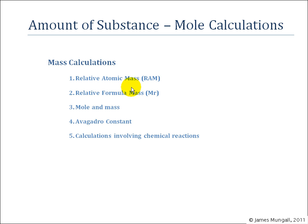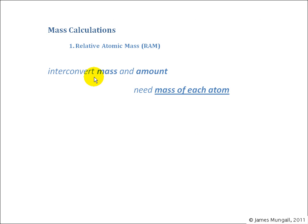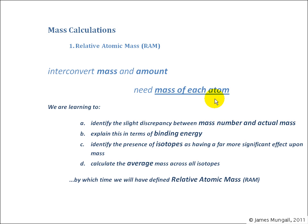But start with relative atomic mass. Our overall objective when doing these mass calculations is to interconvert mass and amount, or number of atoms. To do that we need the mass of each atom. So that's what we're first of all trying to do, work out the mass of each atom, and that's where relative atomic mass comes in.